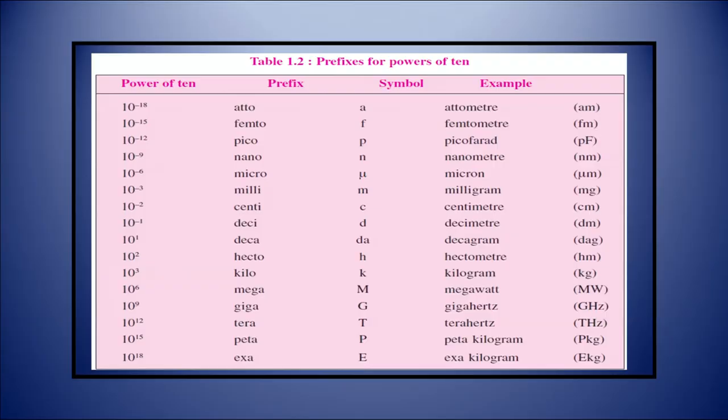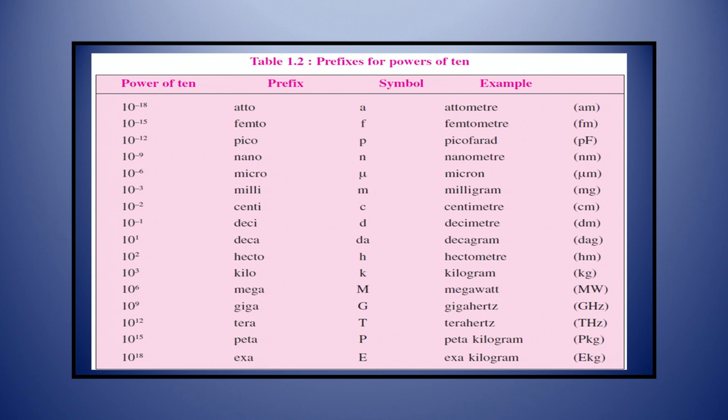The SI system is a metric system. Smaller and larger units — sub-multiples and multiples of 10 — are given special names. You can see the list from the table on your screen. There are many sub-multiples and multiples of units and their prefixes. For example, atto is 10 to the power minus 18, femto is 10 to the power minus 15, pico is 10 to the power minus 12. For larger units: exa is 10 to the power 18, peta is 10 to the power 15, tera is 10 to the power 12, giga is 10 to the power 9, etc.